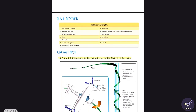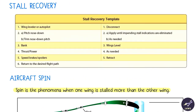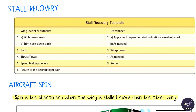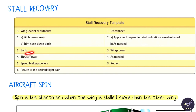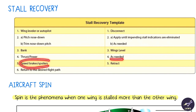Stall recovery: if you are in a stall, disconnect the autopilot, pitch the nose down — this is the most important action — keep wings level, set thrust and power as needed, and retract any speed brakes or spoilers that are extended. The main action is to pitch the nose down.